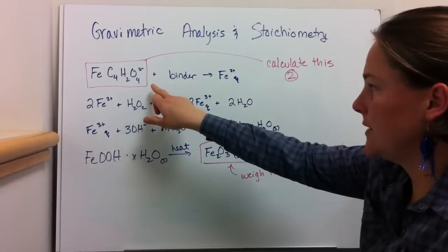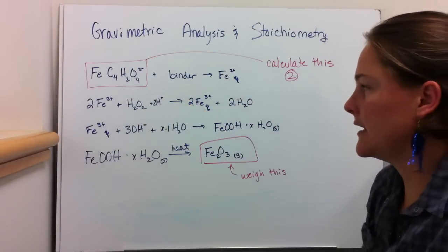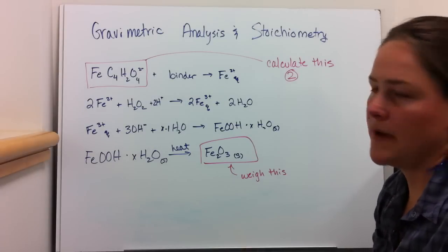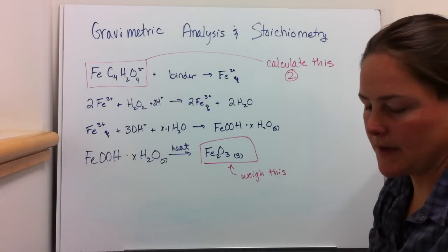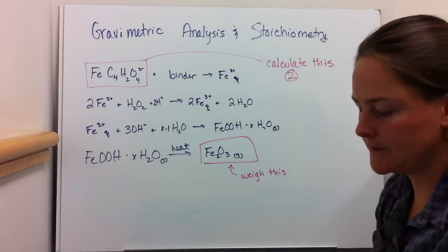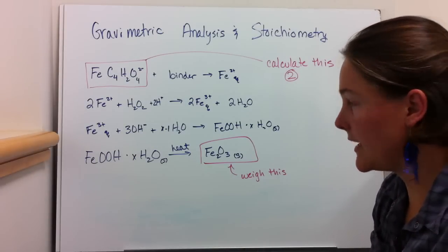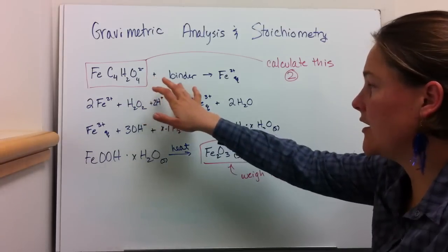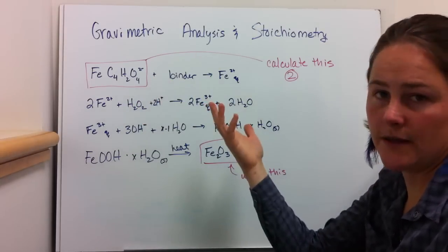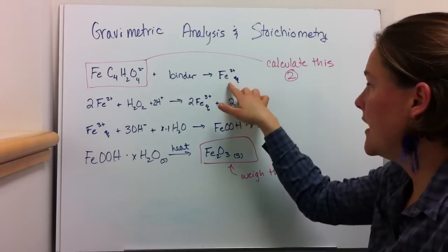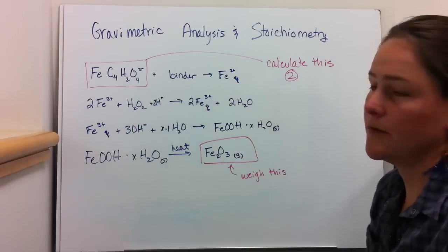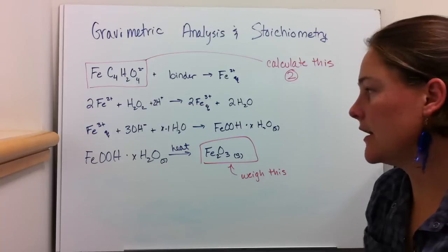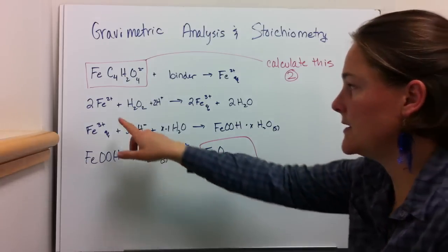Basically, what you have is iron bound up with a binder. You're going to dissolve it and filter away the binder, and you're going to be left with iron-2 aqueous — an aqueous iron-2 species.